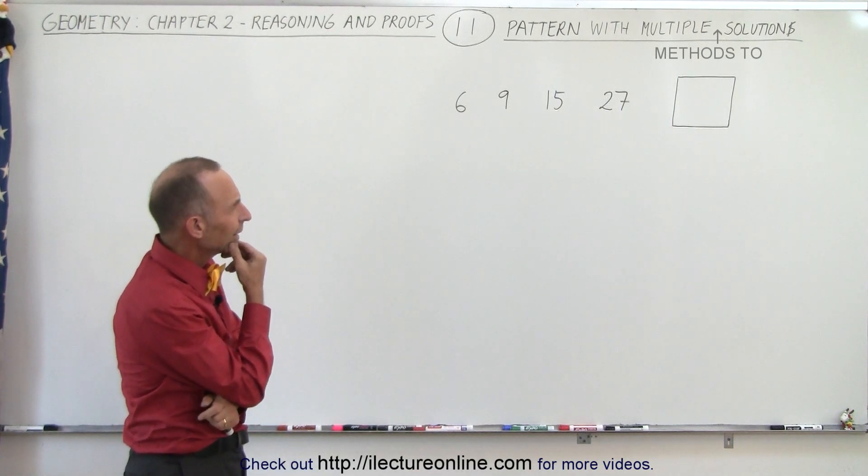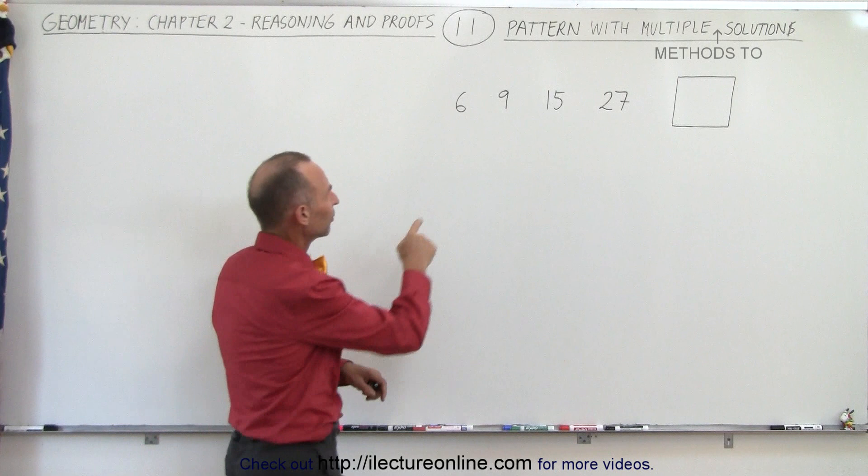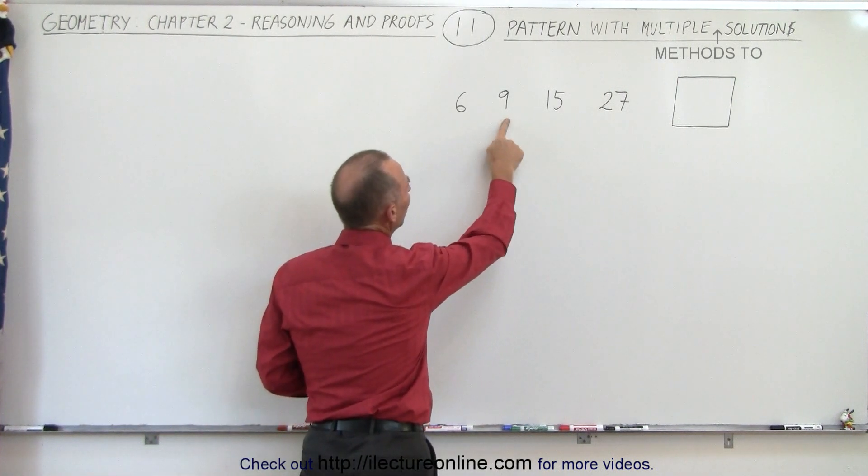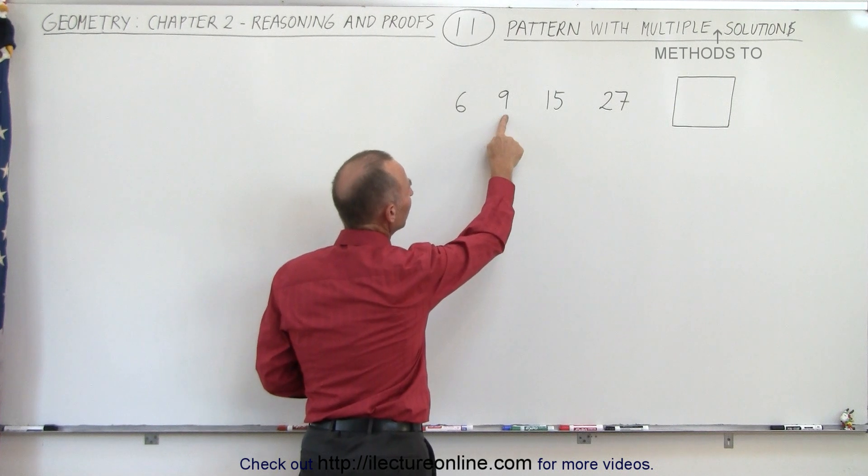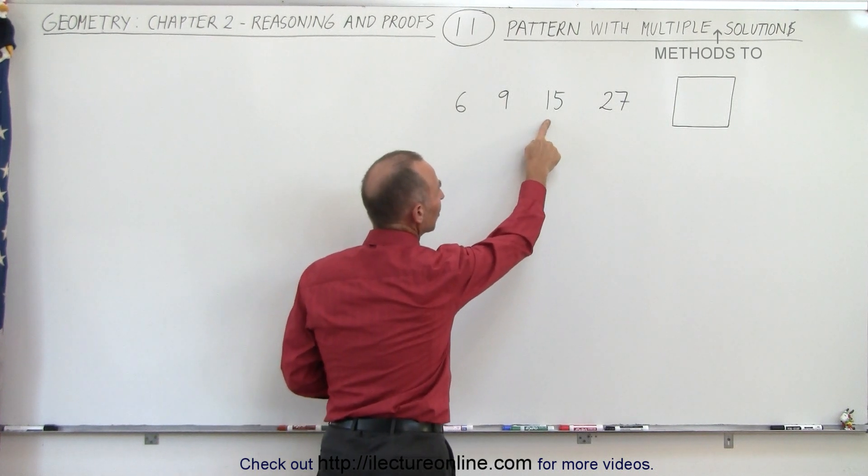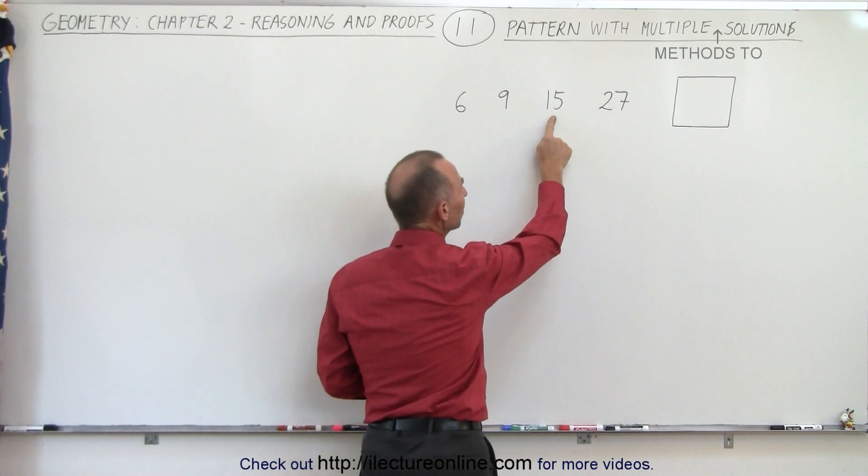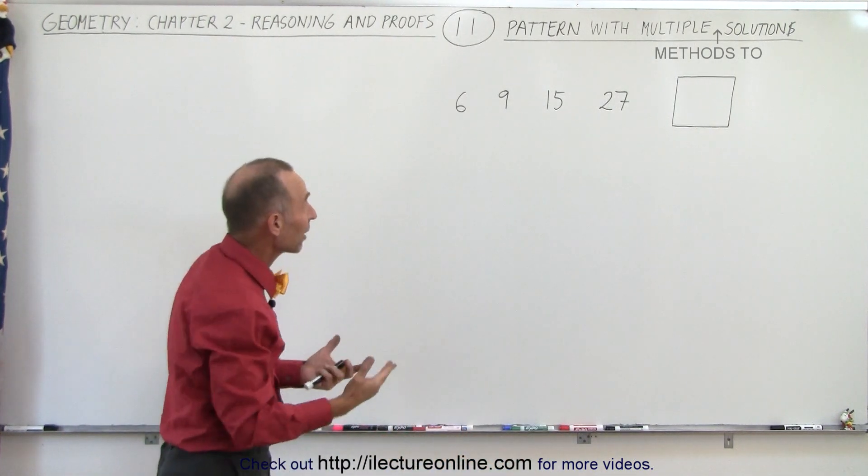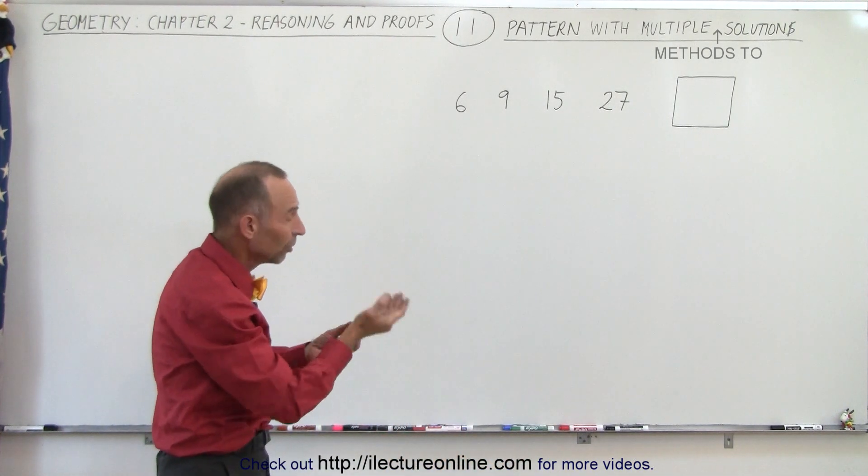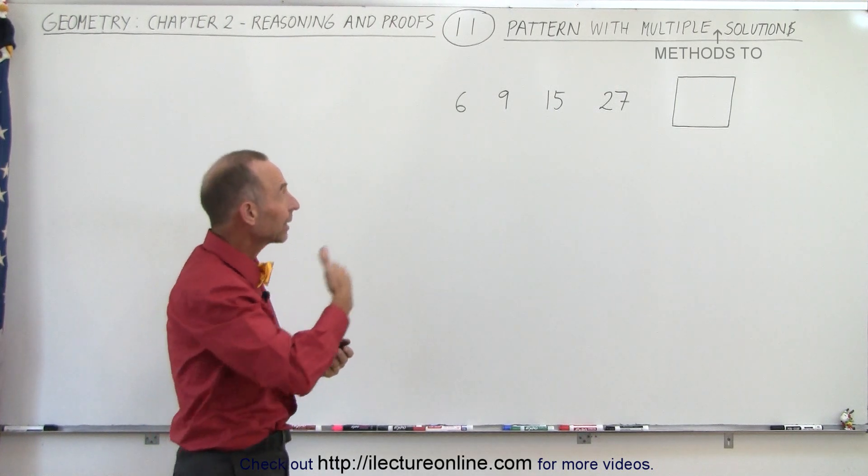When I look at it, I can see that if I double 6 I get 12, which means 9 is 3 less than double 6. If I double this number I get 18, minus 3 gives me 15. If I double this number that gives me 30, minus 3 gives me 27. It looks like one of the patterns is that I can double the previous number, subtract 3 from that, and I get the next number.